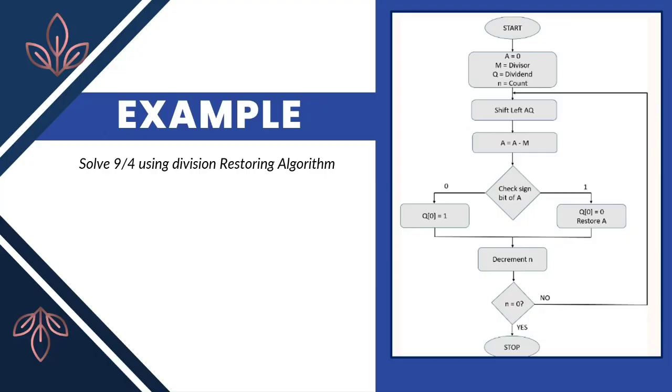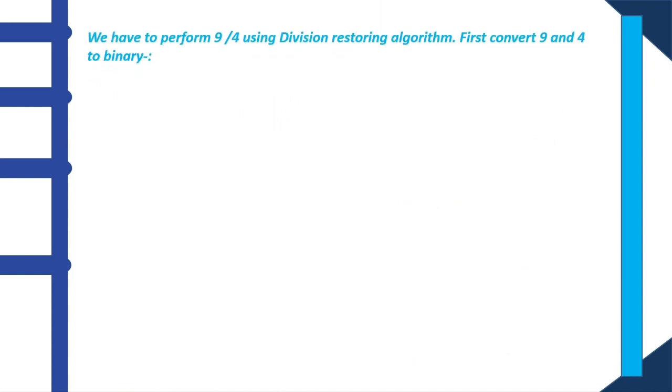Let's move on to the example of division restoring algorithm, which is 9 divided by 4. First we have to convert 9 and 4 into binary format as mentioned above. Next, we will declare M as divisor and Q as dividend and set accumulator A to 0 and store the values.